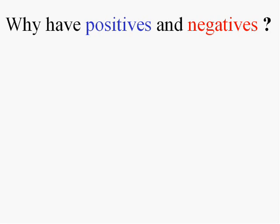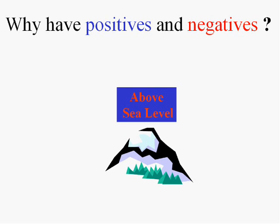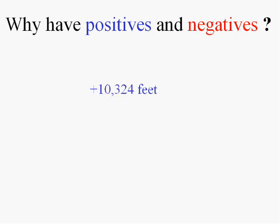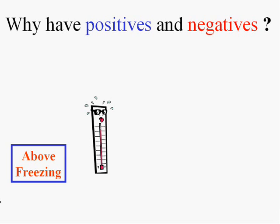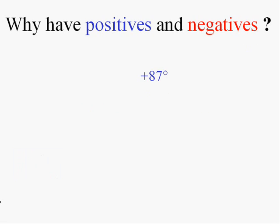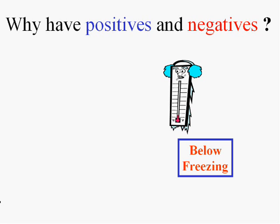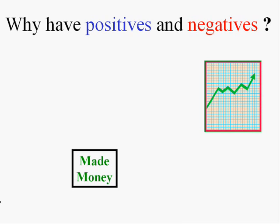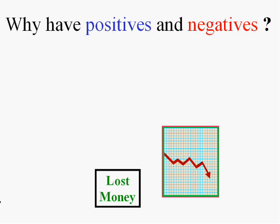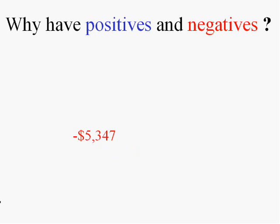Why do we even have positives and negatives? We're going to need to represent things in real life. What would be associated with a number above sea level would be some positive number. But if we go on the other side of 0 — to go below sea level — not only do we want to represent how far below sea level we are, but that we are below sea level. So we'd want a negative number. Similarly, a positive number would put us above freezing, and with temperature we may want to represent below freezing — we're used to that with a negative number. With money, when you make money it's a positive number, but sometimes we lose money and we have to represent it with a negative number — some people say you're in the red.